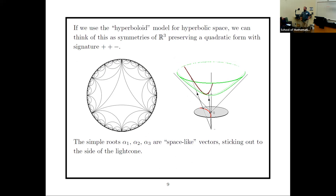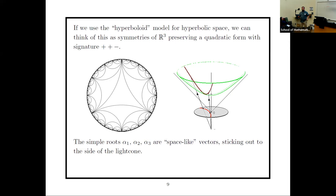Using the hyperboloid model for hyperbolic space — thinking of the hyperbolic plane as one sheet of a two-sheeted hyperboloid — each hyperbolic line is the intersection of the hyperboloid with a linear subspace, and hyperbolic reflections are honest linear reflections of the ambient 3-dimensional space. So we really do have a linear reflection group preserving a form of signature (+,+,−). The simple roots α₁, α₂, α₃ are spacelike vectors sticking out the sides of the light cone.